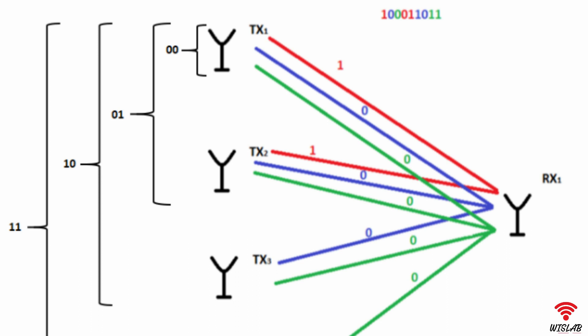In this scheme, the additional data bits are conveyed by changing the number of active transmit antennas instead of their indices, while the number of receive antennas is kept singular.